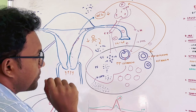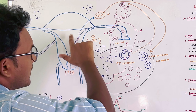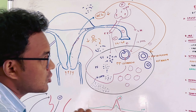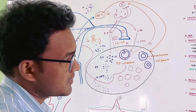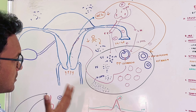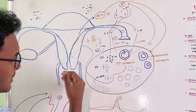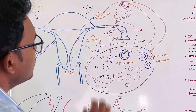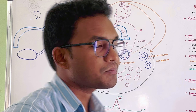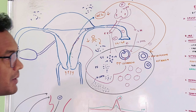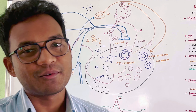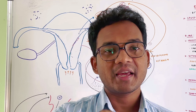The endometriosis can be found in various sites. The most common site is the ovary. The second most common site is the pouch of Douglas and recto-vaginal septum, and also the vaginal rectum. The pouch of Douglas is collected by endometrium and it causes endometriosis.